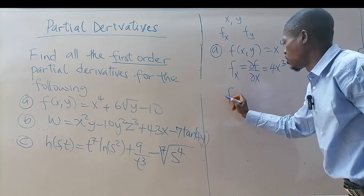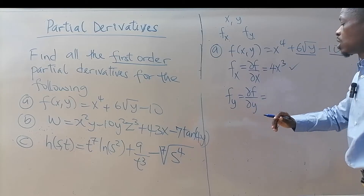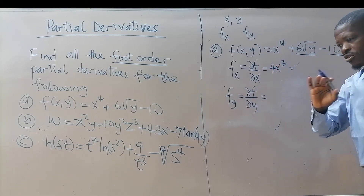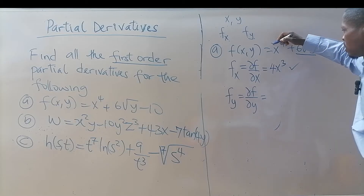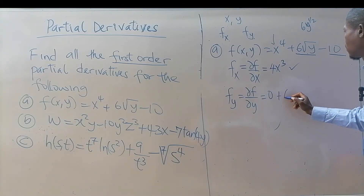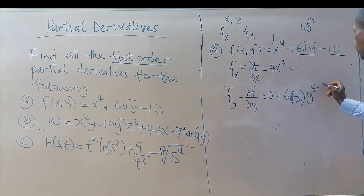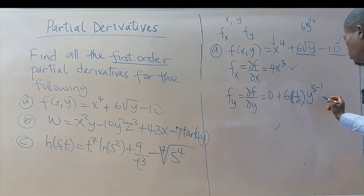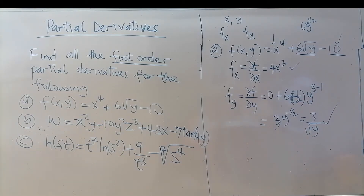Now let's differentiate with respect to y, which is del f over del y. In this case you are only differentiating the y terms; any other variable is treated as constant. The x⁴ term is a constant, so it gives zero. For 6√y, differentiating gives 6 times one-half times y to the power (1/2 - 1), which simplifies to 3 over √y. The -10 is a constant so it's gone. That's the first-order partial derivative with respect to y.